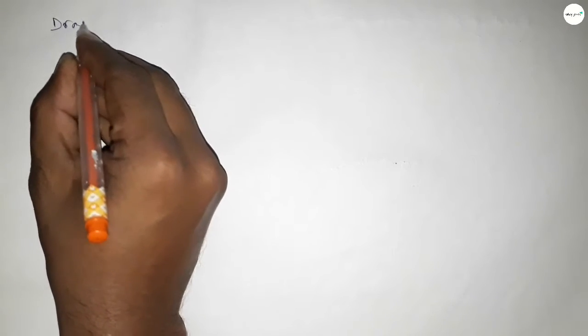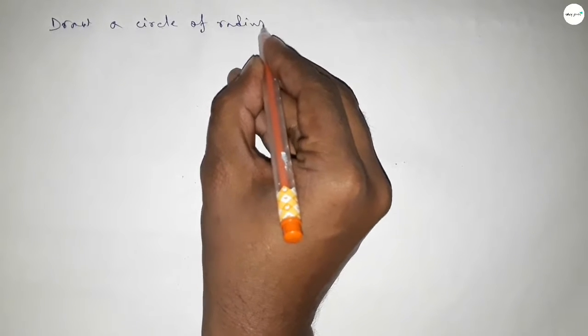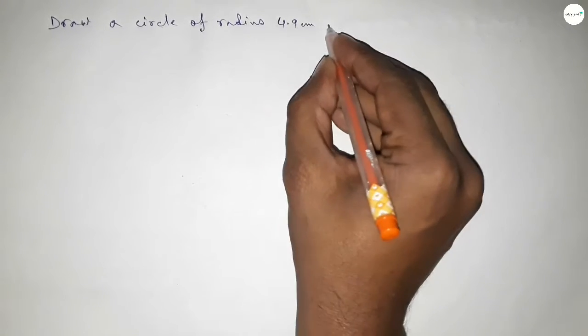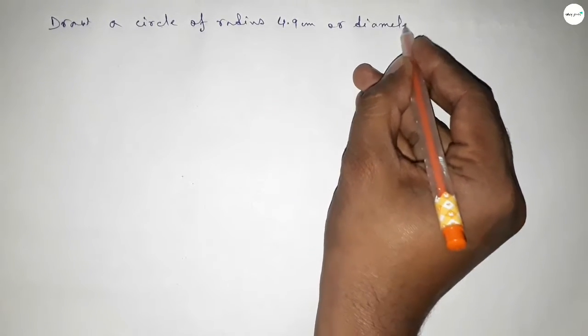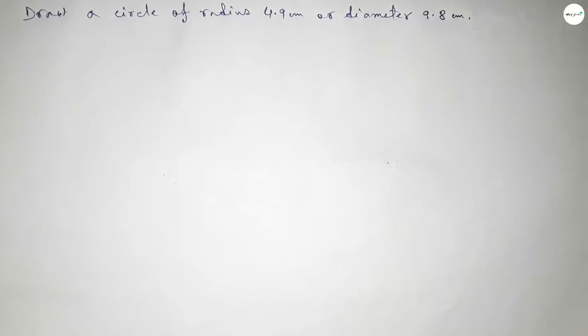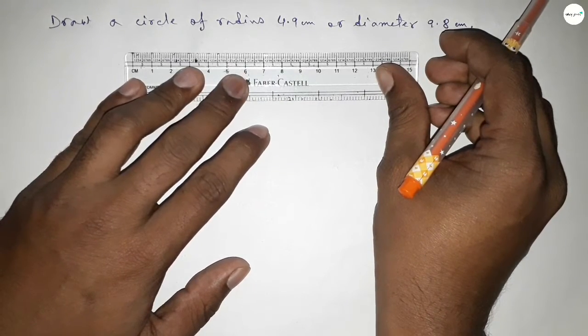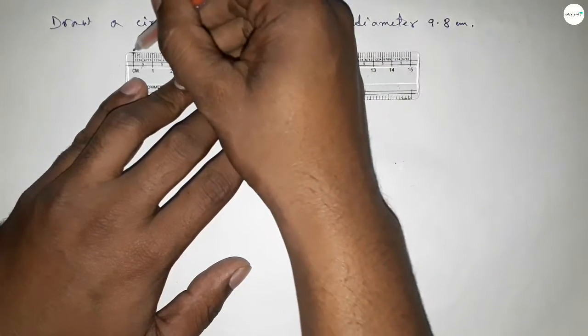Hi everyone, welcome to SSR Classes. Today in this video we will draw a circle of radius 4.9 centimeter or diameter 9.8 centimeter. So let's start the video. First of all we have to draw the length 4.9 centimeter.